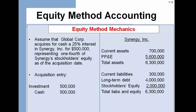Here's an equity method example. Assume that Global Corporation acquires for cash a 25% interest in Synergy for $500,000, representing one-fourth of Synergy's equity on the acquisition date. On Global's books, you record $500,000 investment and $500,000 cash. On Synergy's books there is no impact — nothing changes even though Global owns a good portion.